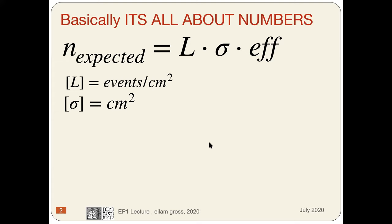Basically, it's all about numbers. We have luminosity, which is the number of events per centimeter squared integrated over time. We have the cross section and we have an efficiency. So the number of expected events is luminosity times cross section times efficiency. That's the magic formula — that's all you need to know.